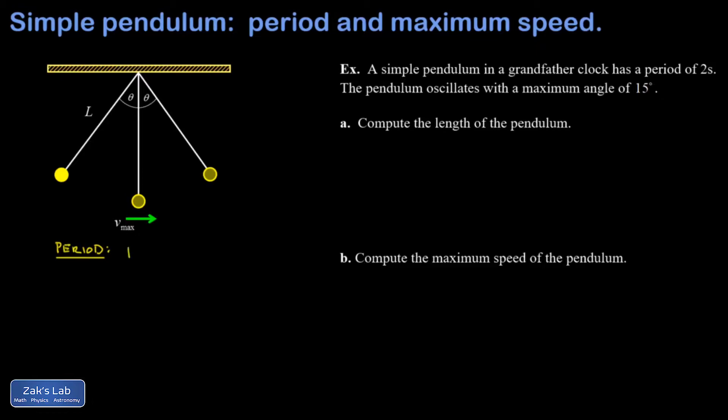For now, I'm just stating the result: T equals 2π times the square root of L over G.